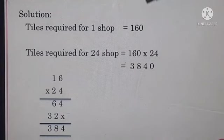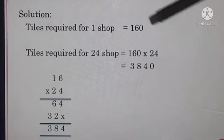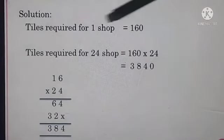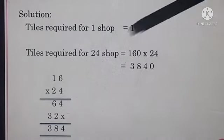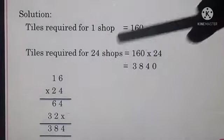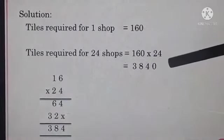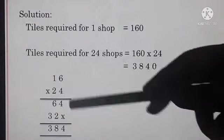So let's start our solution. Tiles required for 1 shop equals 160. When we start the solution, we have given parts to start. Given, tiles required for 1 shop equals 160. Tiles required for 24 shops - 24 shops to remove, then we will multiply 160 multiplied by 24.